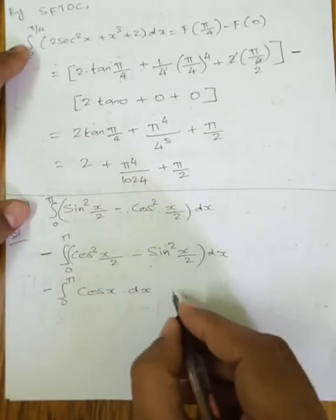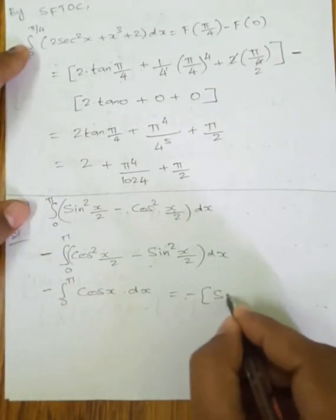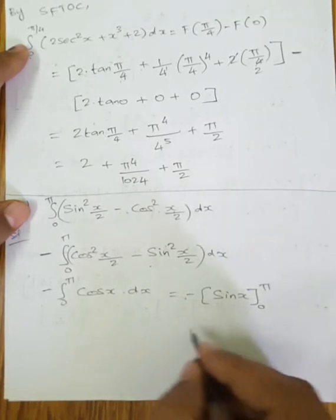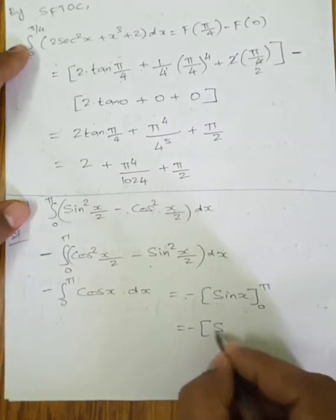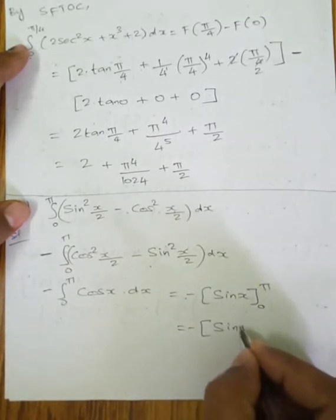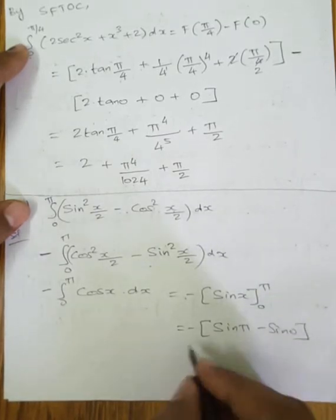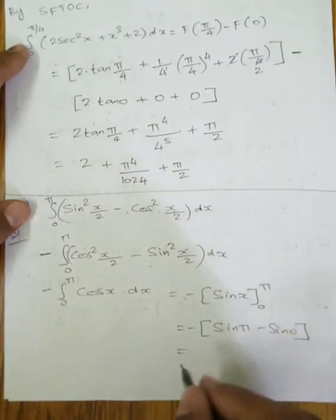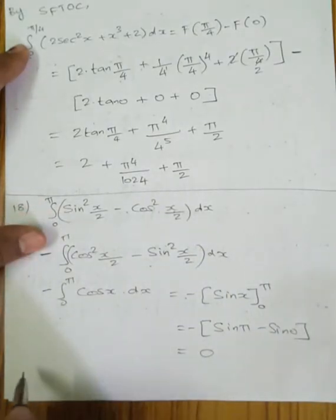So the integral becomes −integration of 0 to 5 of cos x dx = −[sin x] from 0 to 5 = −(sin 5 − sin 0). Since sin 5 ≈ 0 and sin 0 = 0, the final answer is 0.